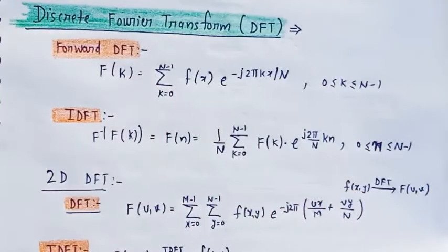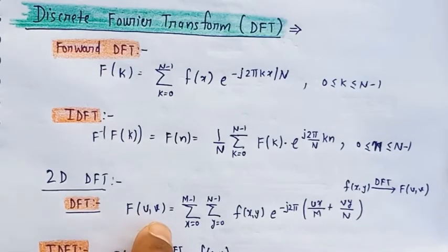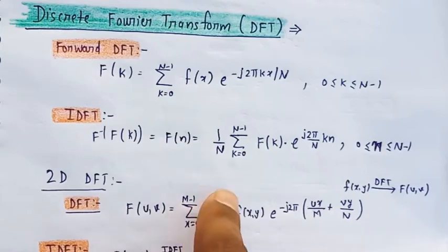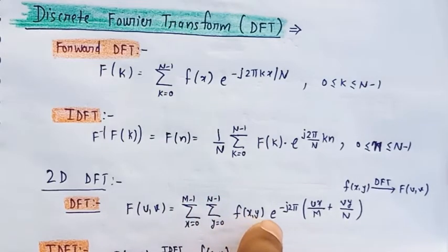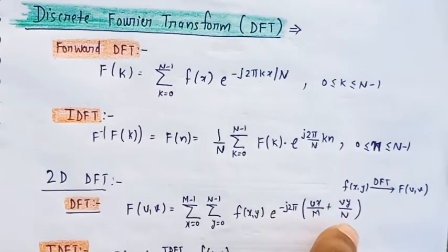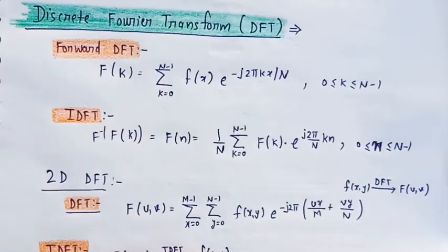In the case of 2D DFT, the formula is similar to transformation in continuous signal. It is used for two variables, so there are two summations: F(u,v) = sum from x=0 to M-1, sum from y=0 to N-1 of f(x,y) * e^(-j2π(ux/M + vy/N)).